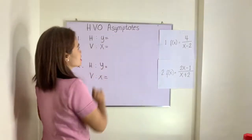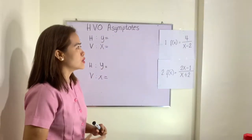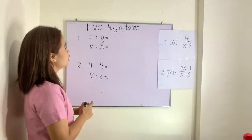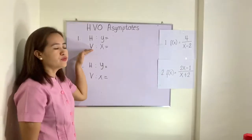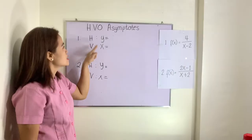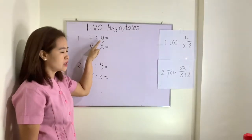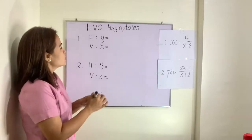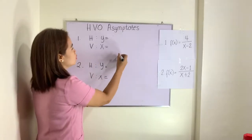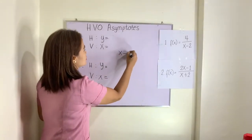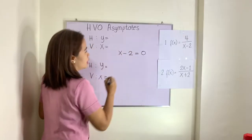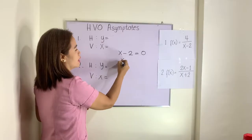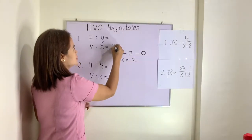Let's take example number one: f(x) = 4 over (x minus 2). When finding the vertical asymptote — that is x equals something — and for the horizontal, y equals something. To find the vertical asymptote, equate the denominator to zero and solve for x. So x minus 2 = 0 gives x equals 2. That is the vertical asymptote.